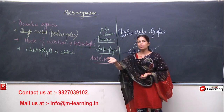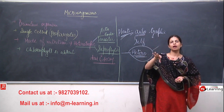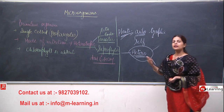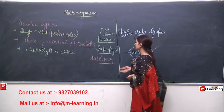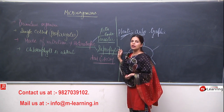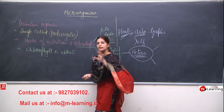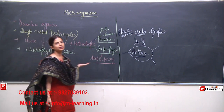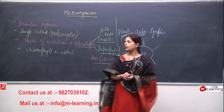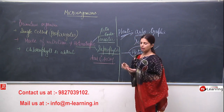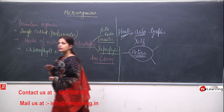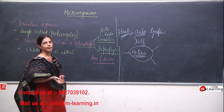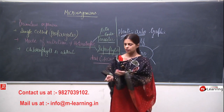Parasites live in the body or on the outside of another organism and get their food by sucking it. Saprophytes get their food from dead and decaying things. Also, the body of bacteria is not divided into roots, stems, or leaves. That is another reason why bacteria are not plants.